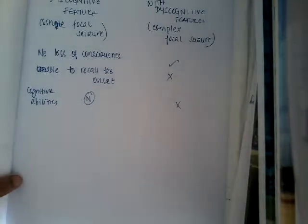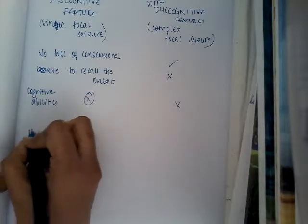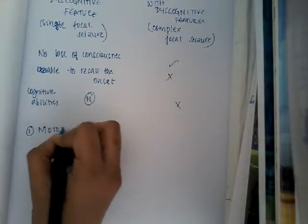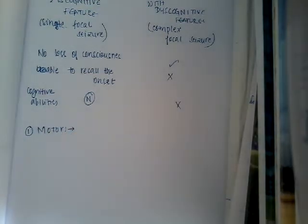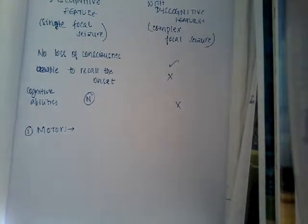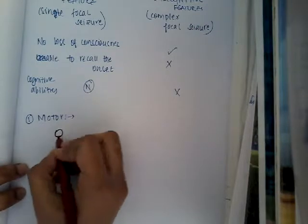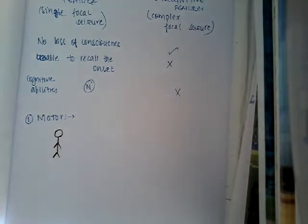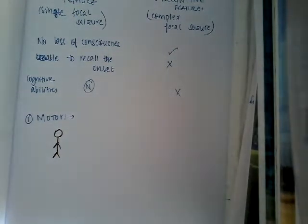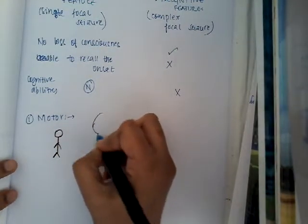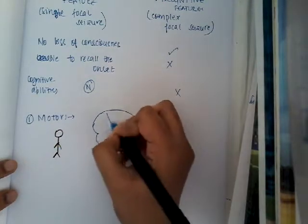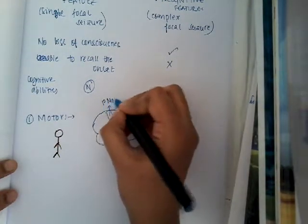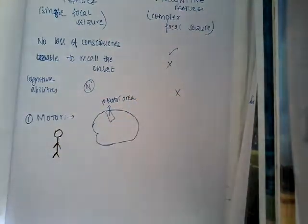In focal seizures with discognitive features, there are motor symptoms. In motor symptoms, the seizure starts mainly from the primary motor cortex area. In the brain there is a primary motor area where the seizure activity starts. In this primary motor area there is a motor homunculus.